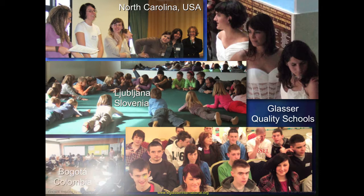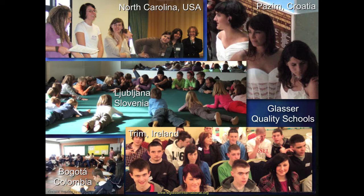I've had the good fortune of visiting a number of these schools and can vouch for the fact that these six characteristics are found in them — for example, the Murray High School in North Carolina, the high school in Pazin, Croatia, a full-range school in Ljubljana, Slovenia, a school from age four to eighteen in Bogota, Colombia (Colegio Rochester), and Youth Reach in Trim, Ireland. All of these have adopted Glasser's ideas and are Glasser Quality Schools.